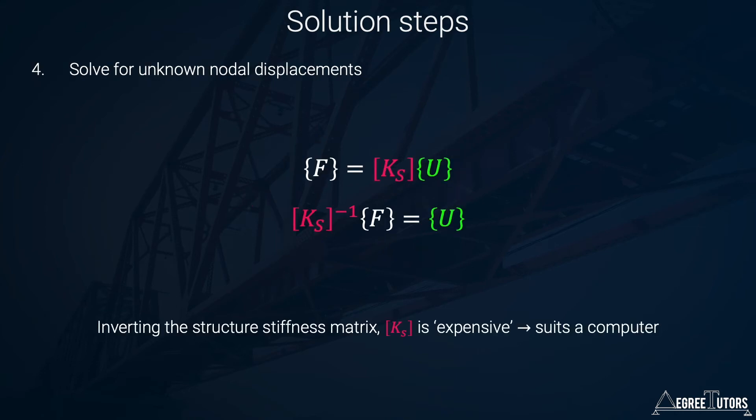Step four is to solve for the nodal displacements. Using the relationship force equals stiffness times displacement, we invert the structure stiffness matrix and multiply it by the force vector to get the displacements — essentially solving a system of linear equations. This is where the method is computationally expensive, relating to inverting that square structure stiffness matrix, which is why this method suits a computer so well.